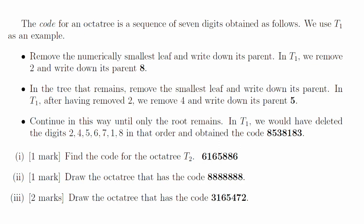Part i, the code for this tree is 6165886. Part 2, the tree with all 8s has 8 as the root and then everything else immediately underneath the 8. Part 3, this tree is just a straight line, 8, 3, 1, 6, 5, 4, 7, 2.